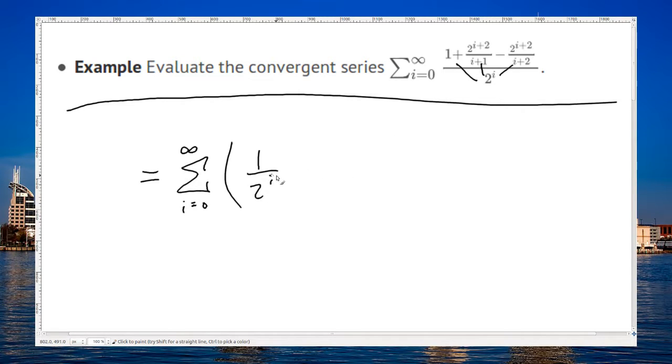So 1 over 2 to the i plus, here we're going to get 2 to the i plus 2 over 2 to the i times i plus 1, plus 2 to the i plus 2 again, all over 2 to the i times i plus 2.